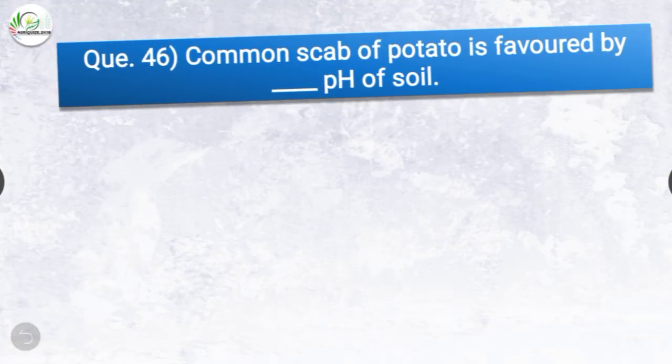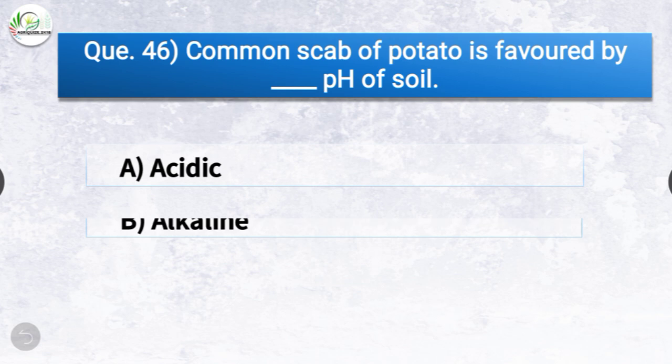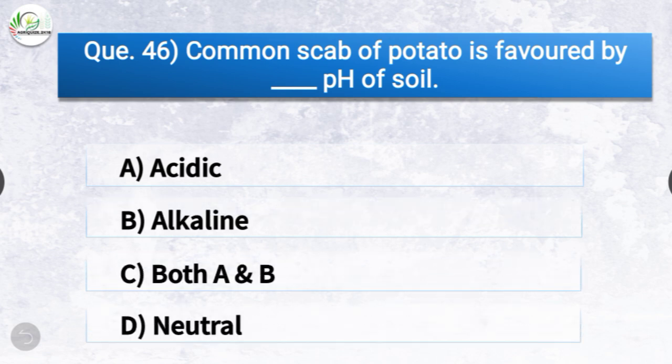Question number forty-six: Common scab of potato is favored by dash pH of soil. The options are acidic, alkaline, both A and B, or neutral. The correct answer is option B, alkaline. Common scab of potato is favored by alkaline pH of soil. Potato scab is common in alkaline soil, whereas cotton wilt and club root of cabbage are common in acidic soils.